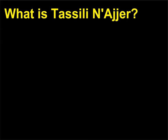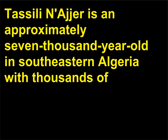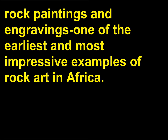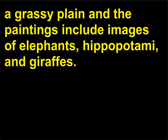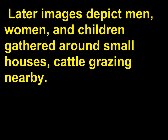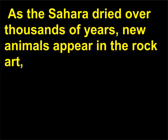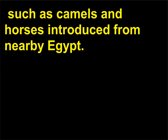What is Tassili-n-Ajjer? Tassili-n-Ajjer is an approximately 7,000-year-old site in southeastern Algeria with thousands of rock paintings and engravings — one of the earliest and most impressive examples of rock art in Africa. During the time when many of the images were made, this section of the Sahara desert was a grassy plain, and the paintings include images of elephants, hippopotami, and giraffes. Later images depict men, women, and children gathered around small houses with cattle grazing nearby. As the Sahara dried over thousands of years, new animals appear in the rock art, such as camels and horses introduced from nearby Egypt.